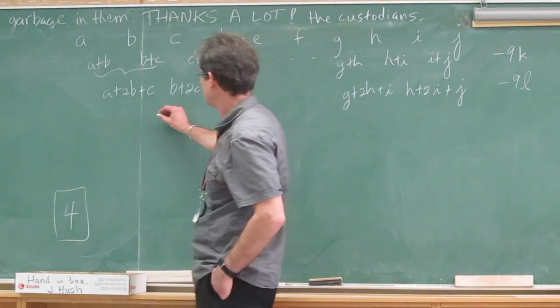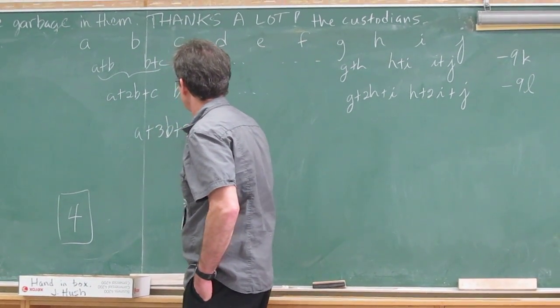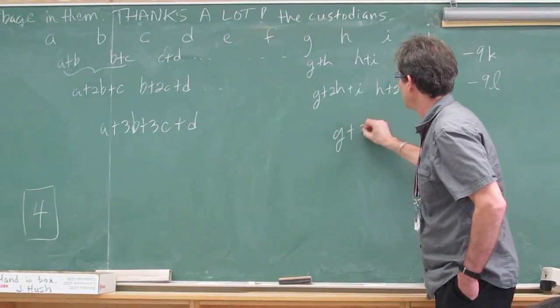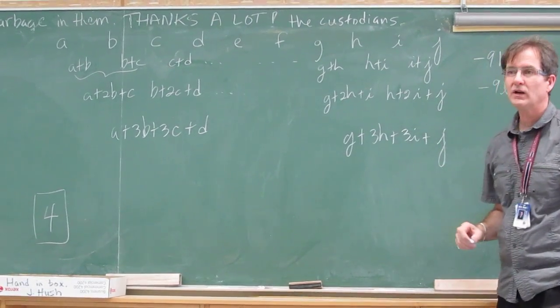If you keep doing this, I'll do it one more time here. You're going to get A plus 3B plus 3C plus D. And over here you'll get G plus 3H plus 3I plus J. It should look even more like Pascal's triangle.